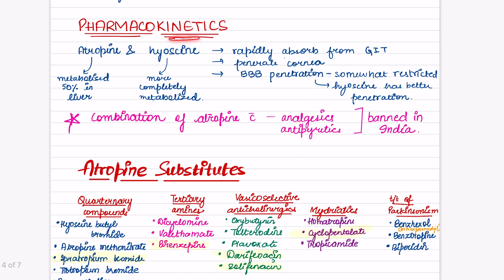Coming to the pharmacokinetics: atropine and hyoscine are rapidly absorbed from GIT, they penetrate cornea, and blood-brain barrier penetration is somewhat restricted. Hyoscine has better penetration. Atropine is metabolized 50% in liver whereas hyoscine is more completely metabolized. Combination of atropine with analgesics and antipyretics is banned in India.